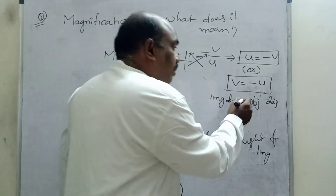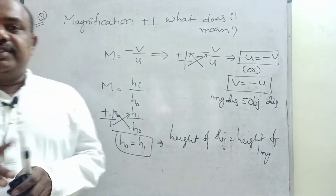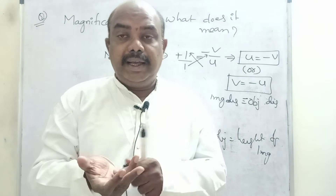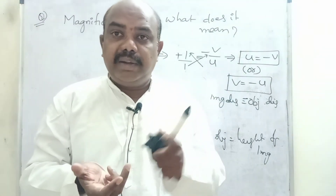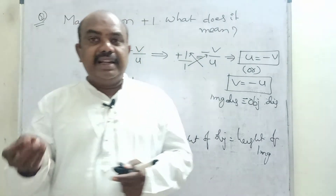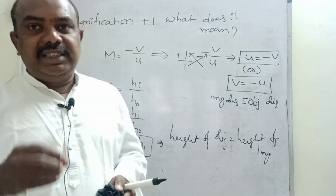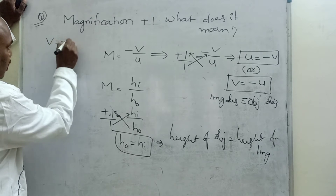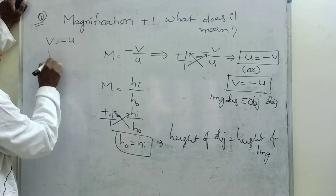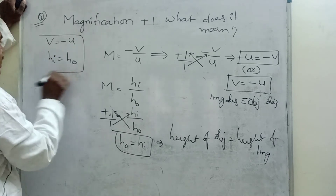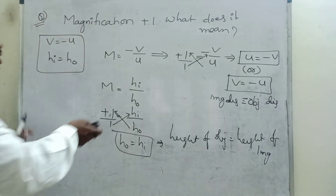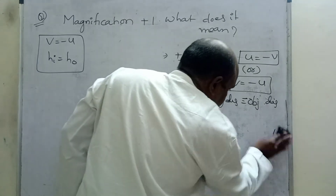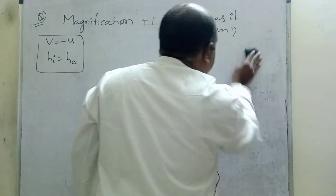Object distance is equal to image distance, but with a minus sign. These two conditions must be satisfied by some mirror. We will check whether they are satisfied by a concave mirror, a convex mirror, or a plane mirror. First, let us draw a concave mirror. This is a curved surface with silver mercury amalgam painted outside. This is the principal axis, the geometrical midpoint called the pole, focus F, and center of curvature C.